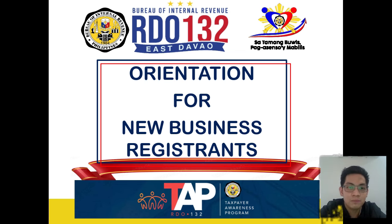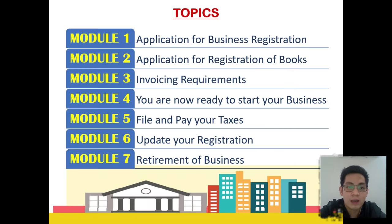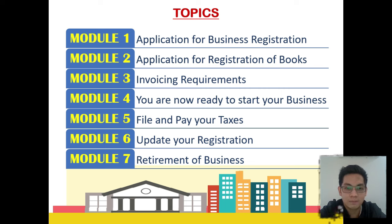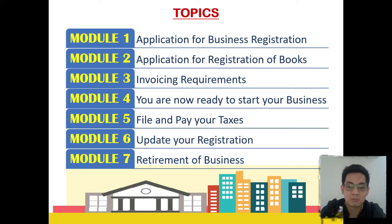To cover our discussion, we have seven modules. First, application for business registration. Second, application for registration of books. Third, invoicing requirements. Fourth, you are now ready to start your business. Fifth, file and pay your taxes. Sixth, update your registration. Seventh, retirement of business.